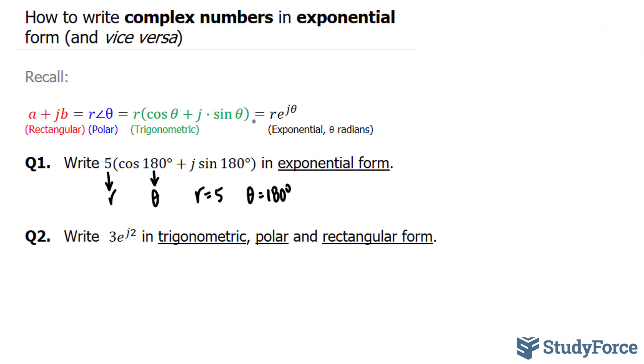So we need to convert 180 degrees into radians. From past experience, I know 180 degrees is equal to pi radians. So instead of using 180 degrees, I'll simply use pi, where we end up with 5 times e to the power of j pi.